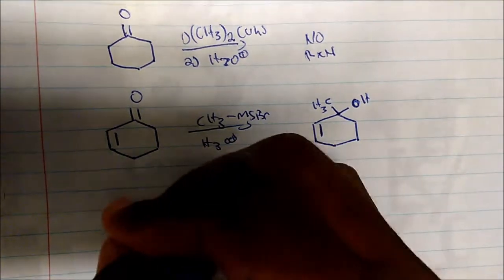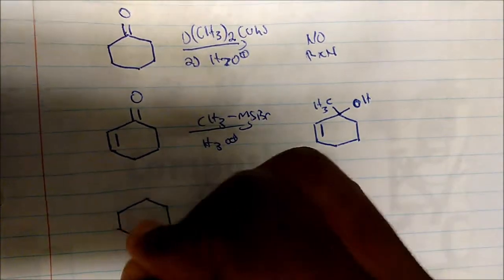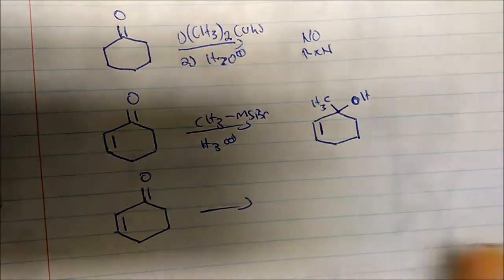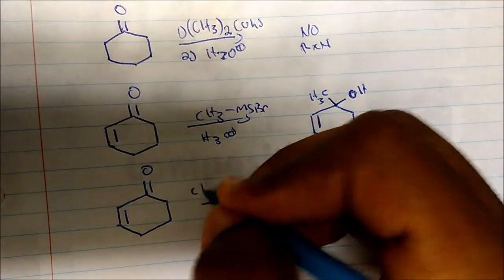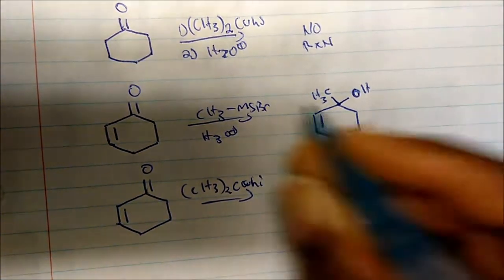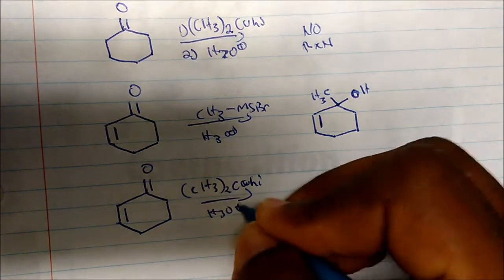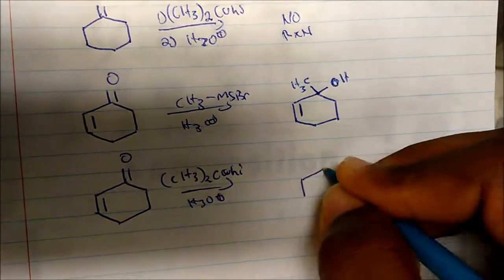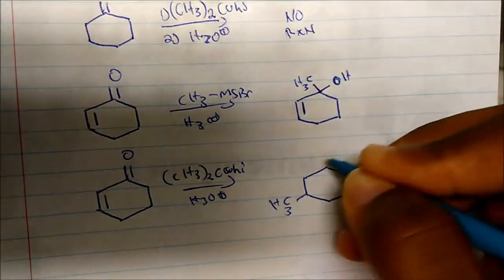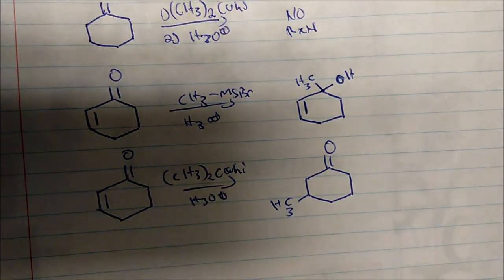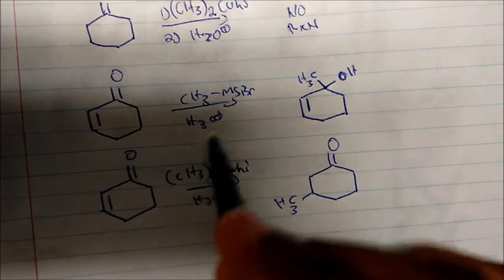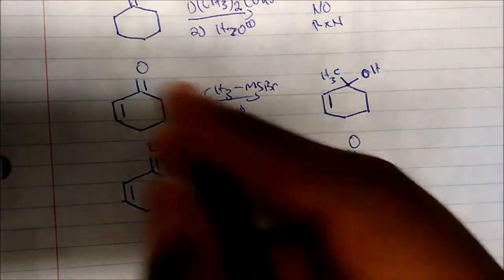But if I take the same molecule in contrast and I use my Gilman reagent with acid workup, here's what I'll create. I get the beta product, so my nucleophile will be added on to the beta carbon.